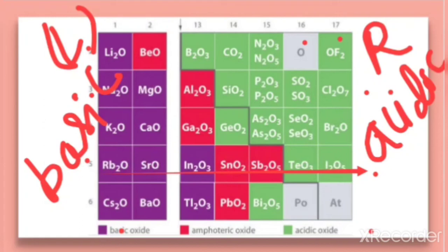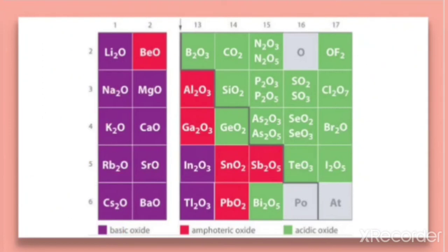As we move from left to right in a period, metallic character decreases, so in between there are elements that show intermediate properties between metals and non-metals — these are called metalloids. Their oxides are neither purely acidic nor purely basic; they show both acidic and basic properties. Such oxides are called amphoteric oxides.